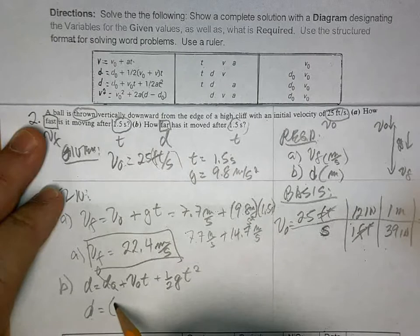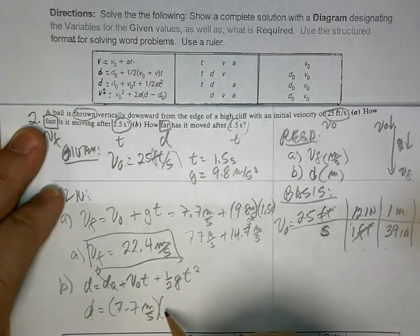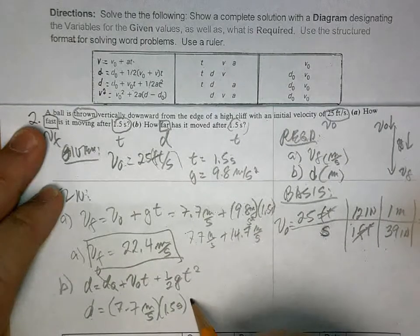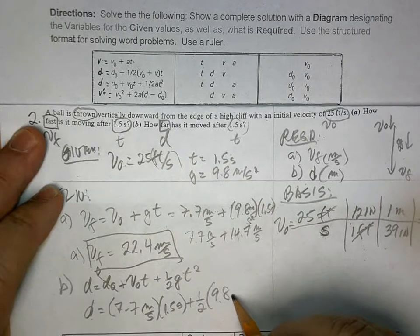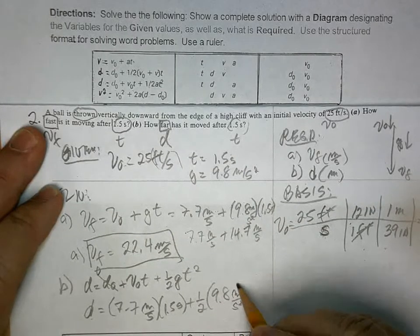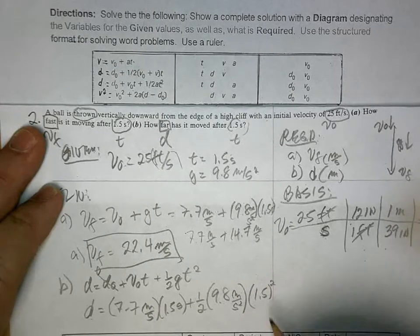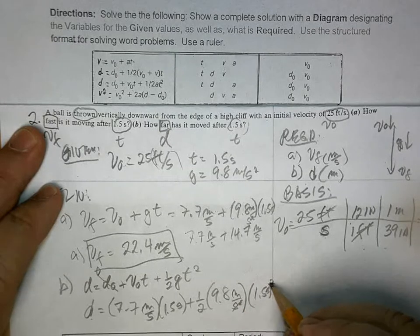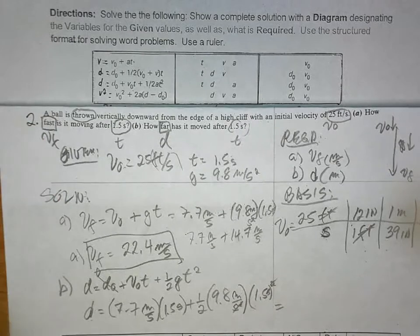D is equal to 7.7 meters per second times 1.5 seconds. One half, 9.8 meters per second squared times 1.5 squared. This is second squared. That cancels, right? And so, we have meters. And what's the answer?